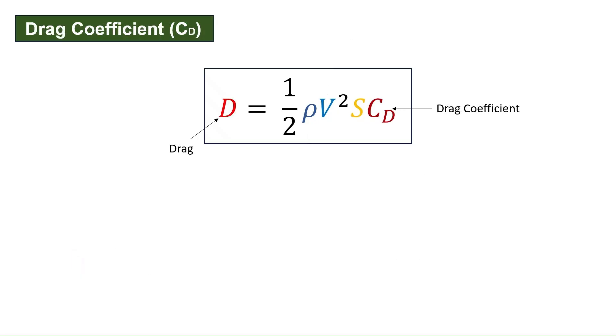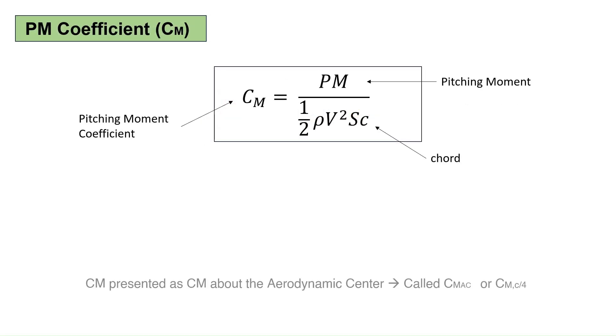The drag coefficient is defined similarly to the lift coefficient, and drag can be calculated using this equation. The definition of the pitching moment coefficient is a little different from the definition of CL and CD. A moment has the units of a force times a distance, so it is necessary to divide it by a reference length as well as a reference area and dynamic pressure to non-dimensionalize it. The reference length used is the wing cord.